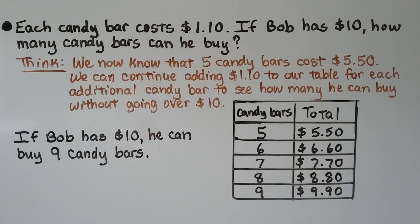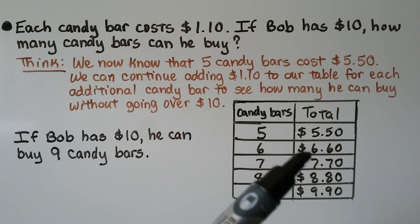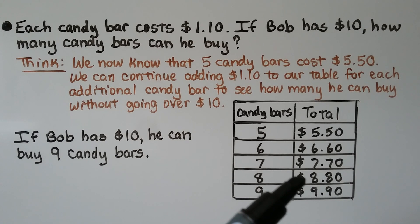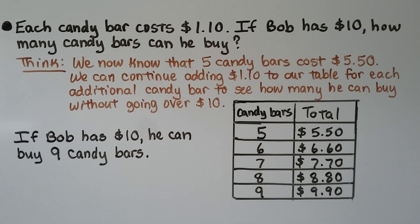Each candy bar costs $1.10. If Bob has $10, how many candy bars can he buy? We know that five candy bars cost $5.50. We can continue adding $1.10 to our table for each additional candy bar to see how many he can buy without going over $10. Six candy bars would be $6.60, seven would be $7.70, eight would be $8.80, and nine would be $9.90. We haven't gone over $10, so if Bob has $10, he can buy nine candy bars.